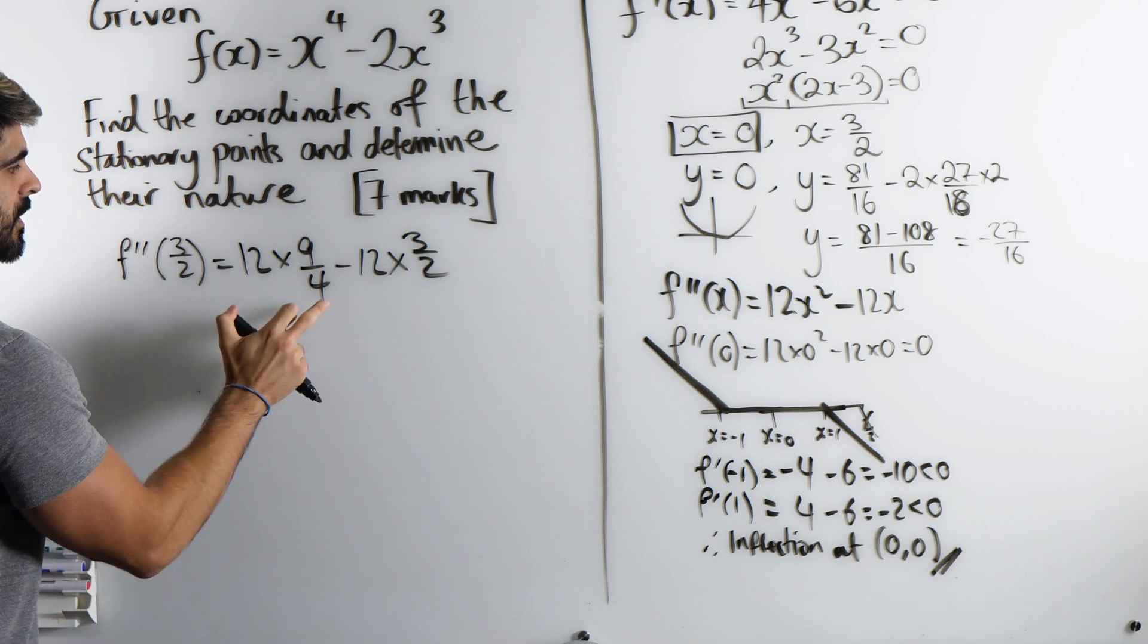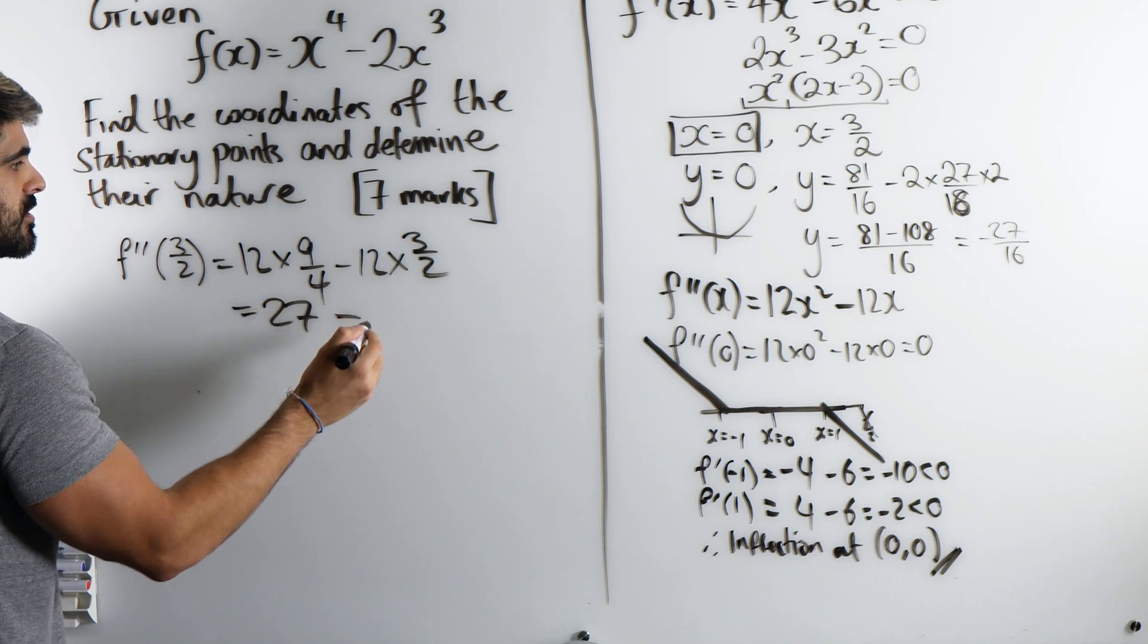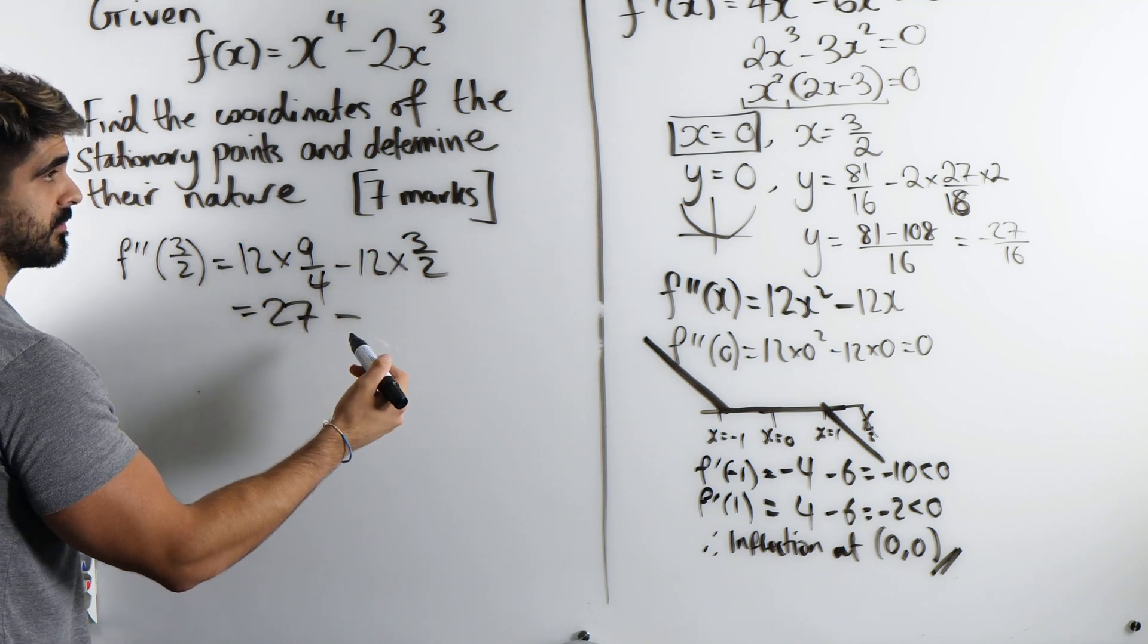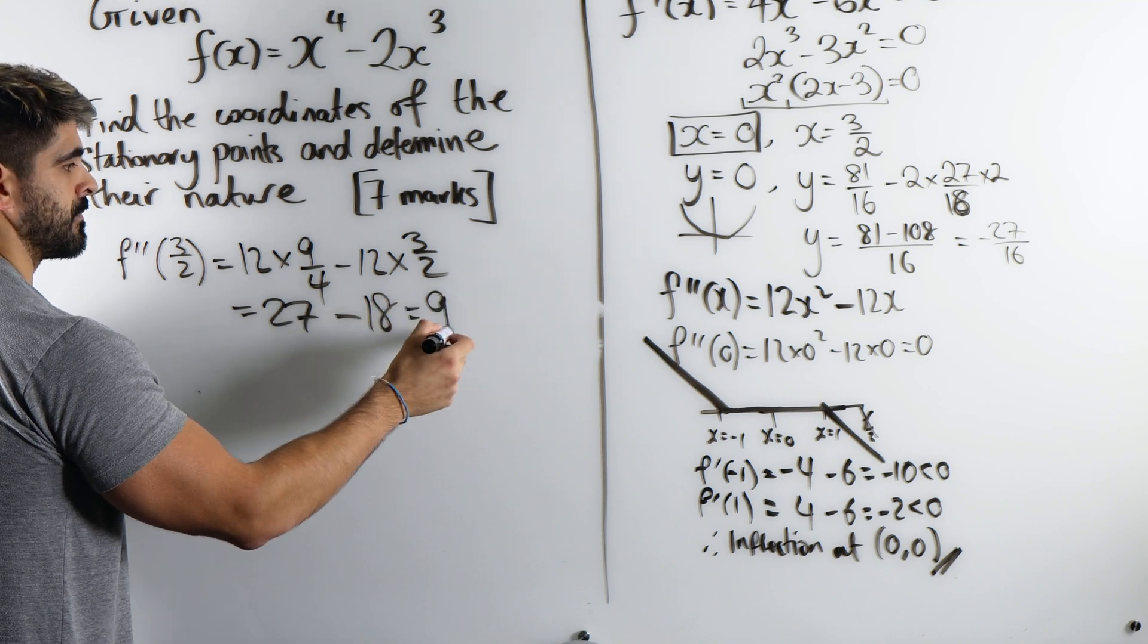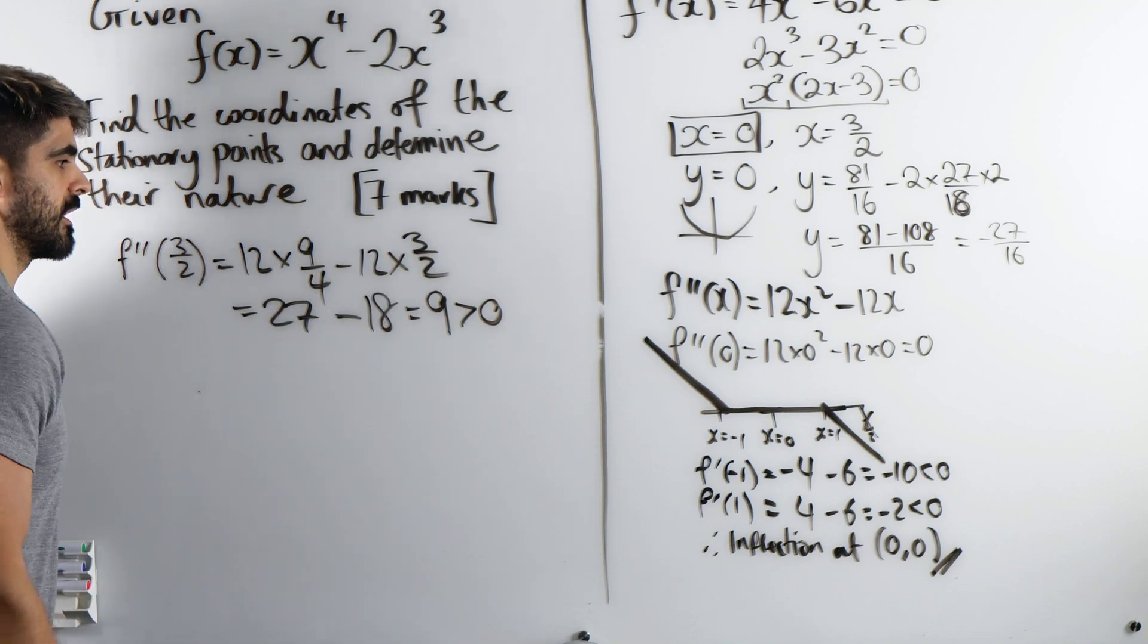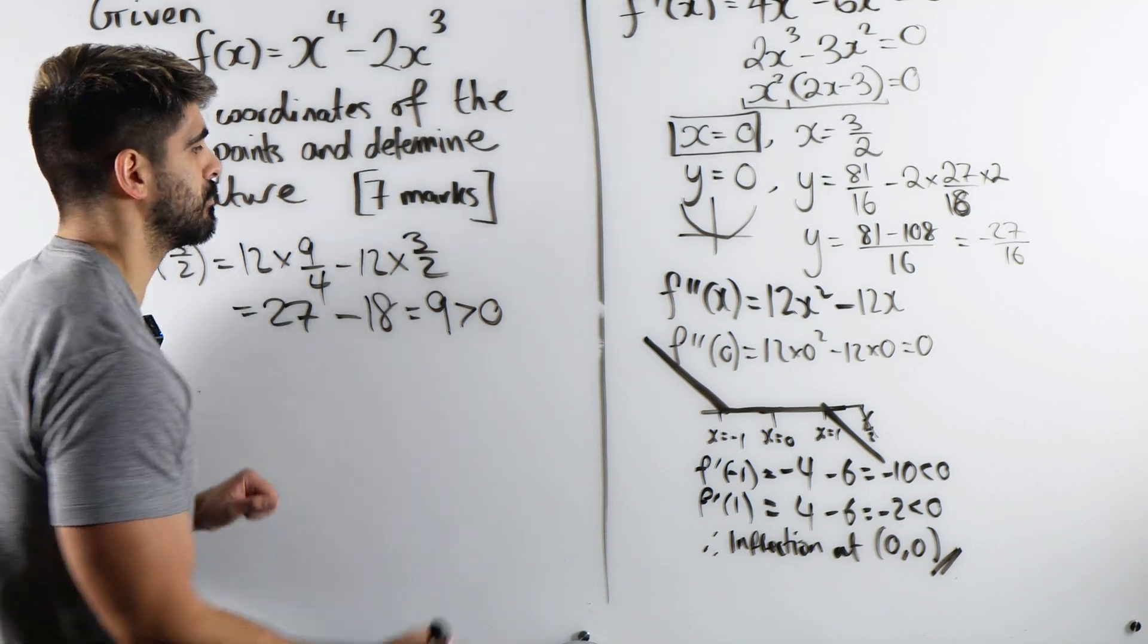4 goes into 12, 3 times, times 9 is 27. Minus 6 times 3, 18. Which is 9. Bigger than 0. If the second derivative is positive, that indicates a minimum point. Now why is that?